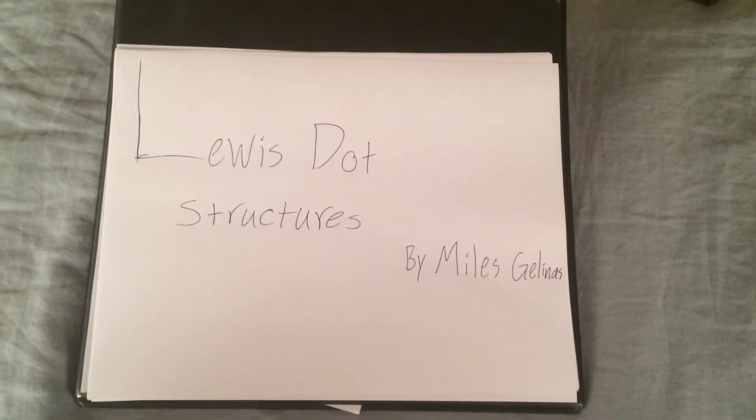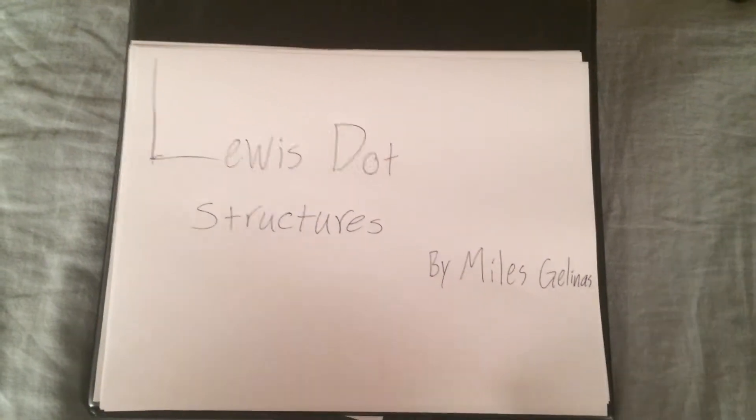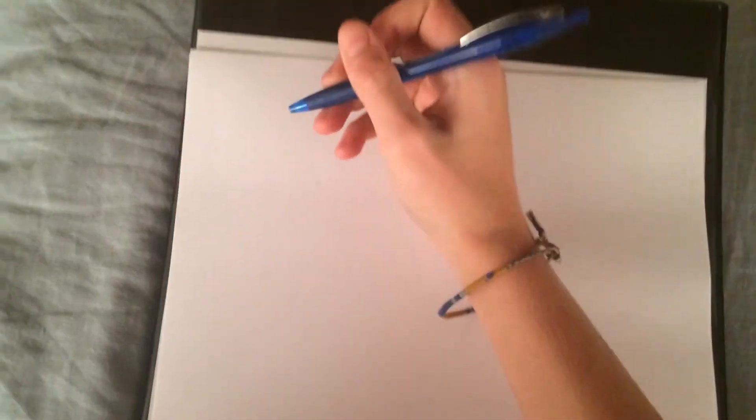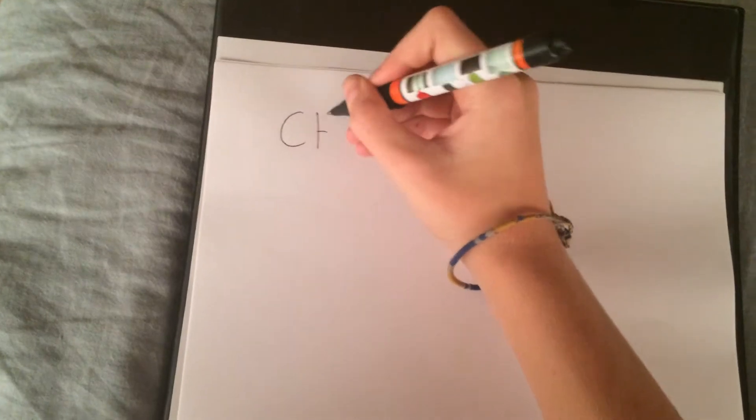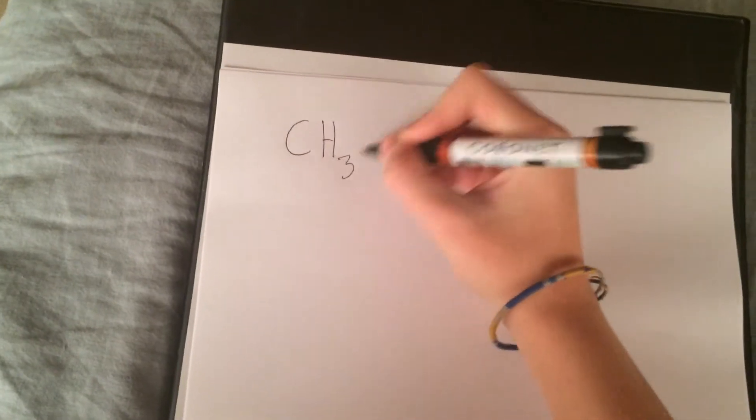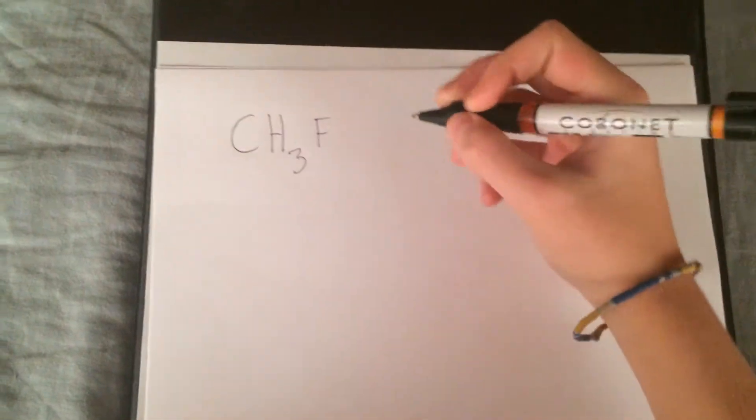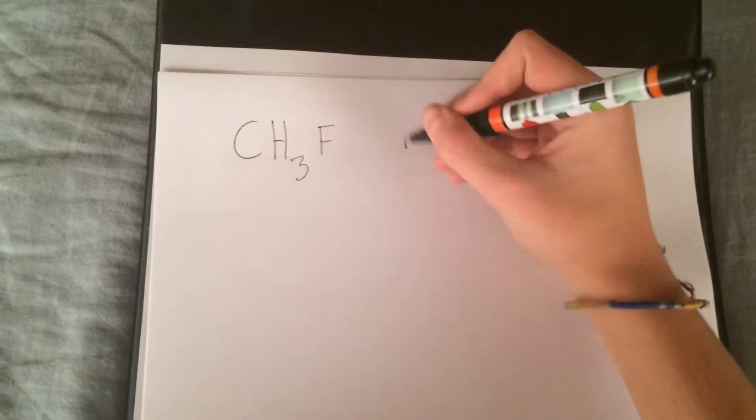Here is my tutorial on Lewis dot structures by Myles Gelinas. The first molecule we will be looking at is CH3F, also known as fluoromethane.